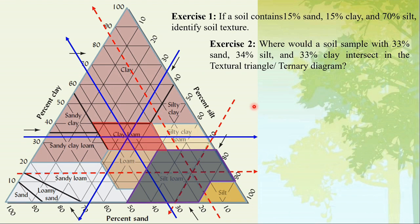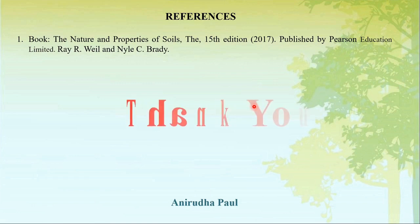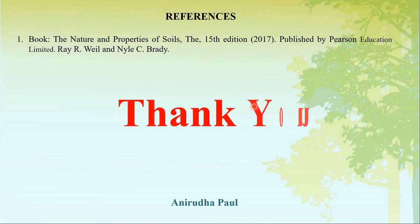By using this textural triangle or ternary diagram, we can easily identify the soil texture if we know the percentage of the major soil particles — sand, silt, and clay. Thank you for watching this video.